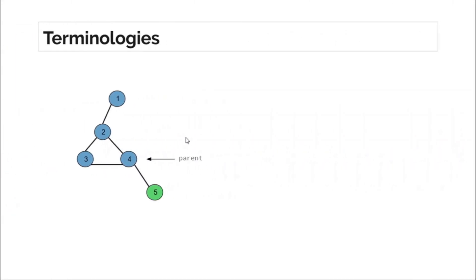Let's look at some terminologies. The first one is parent. Node five is currently the node on which DFS is being performed, and node four made a DFS call to node five, so node four is the parent of node five. Similarly, if node two makes a DFS call to node four, then node two becomes the parent of four.